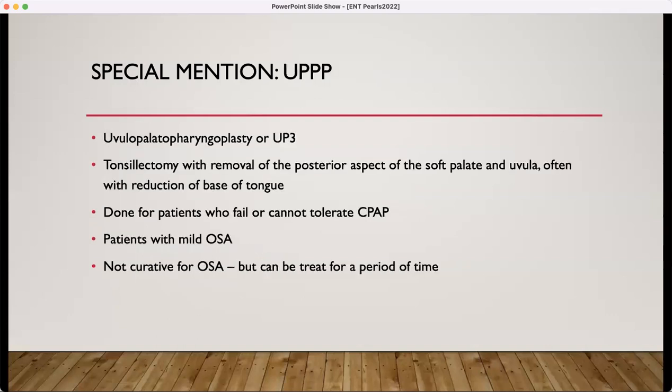A UP3 is a very aggressive tonsillectomy that also includes removal of the posterior aspect of the soft palate and uvula, and often also has a reduction of the base of tongue if it's bulky. This is done for patients who fail or cannot tolerate CPAP, and is only for patients with mild sleep apnea — it's not curative. The sleep apnea may return. Really recommending CPAP as the first line — that is just the best solution and treatment for sleep apnea.